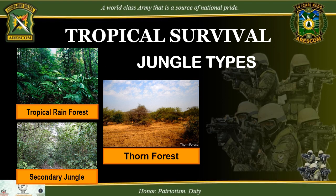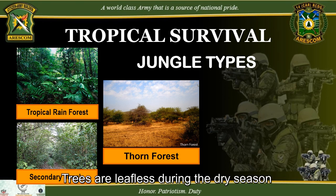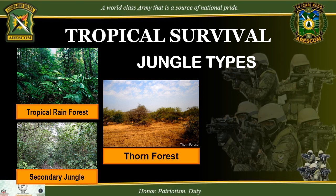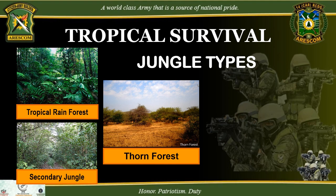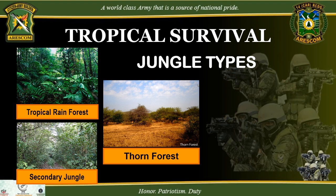The chief characteristics of tropical scrub and thorn forests are: there is a definite dry season; trees are leafless during the dry season; the ground is bare except for a few tufted plants in bunches; grasses are uncommon; plants with thorns predominate; and fires occur frequently.